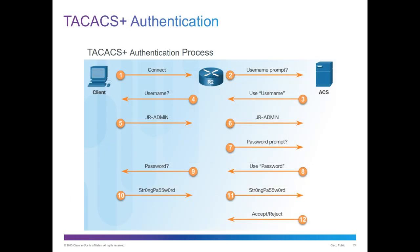Since TACACS was first, here we have the 12-step process. Connect, user prompt — the access server responds with a username request, the router forwards that to the client. The client responds with the username, the router forwards that to the ACS. The ACS prompts for a password, the router forwards that to the client. The client sends the password in a hash format, the router sends that hash to the ACS. The ACS accepts or rejects it, the router receives the accept or reject, then allows the client based off that result — 12 steps.